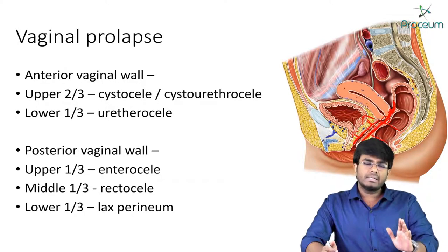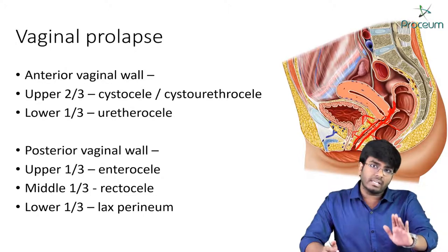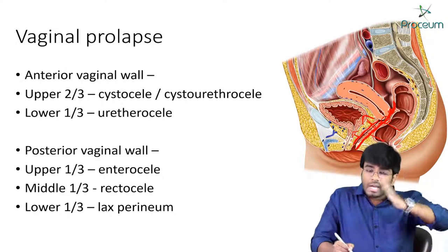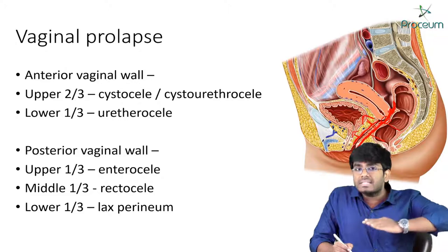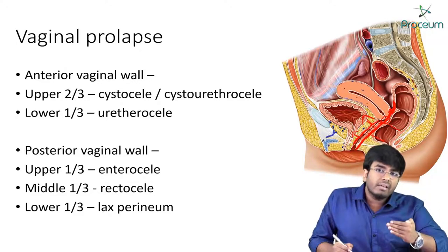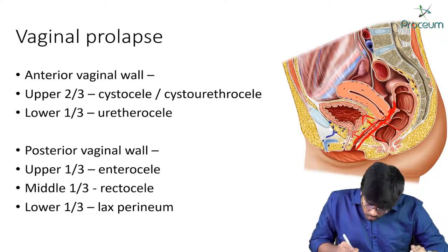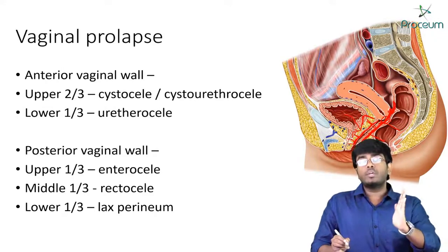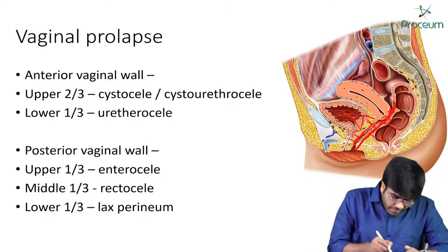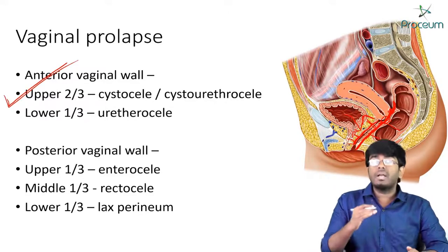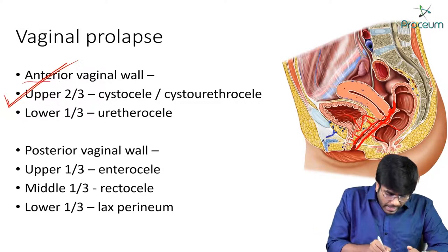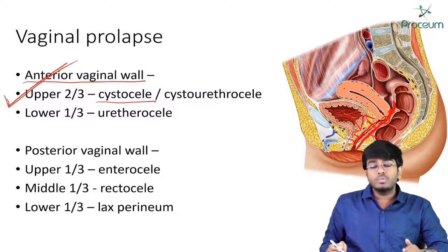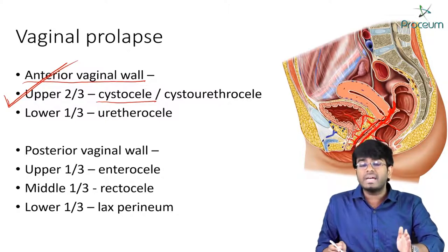Whenever there is prolapse of the anterior vaginal wall — the anterior vaginal wall comes down and prolapses out — the urinary bladder and the urethra will also fall down. So whenever there is prolapse of the upper two-thirds of the anterior vaginal wall, you will call it a cystocele, because the urinary bladder is in close proximity with the anterior vaginal wall above.